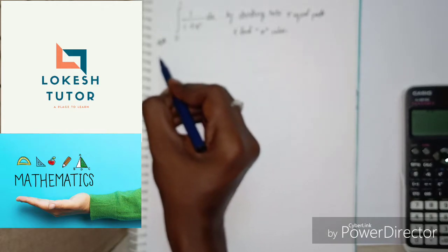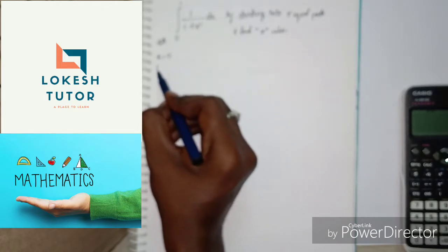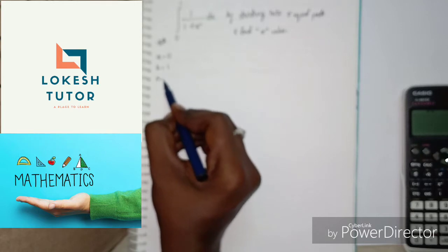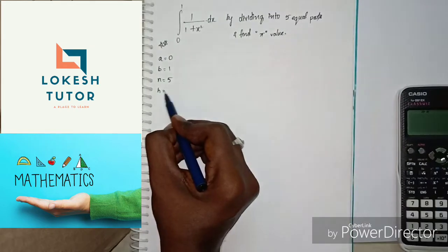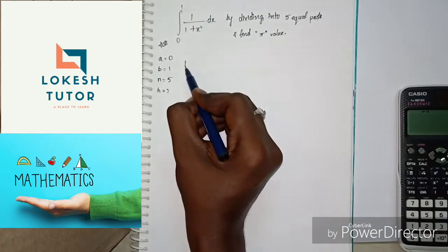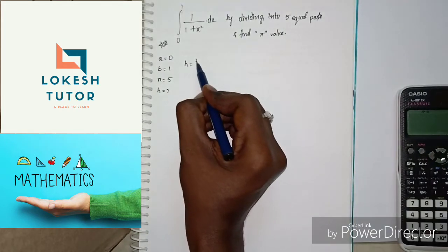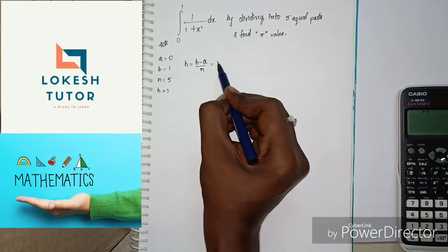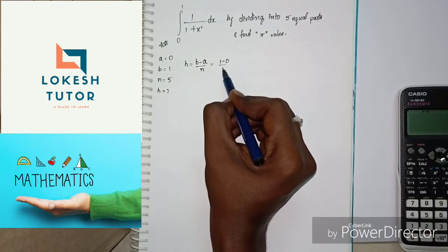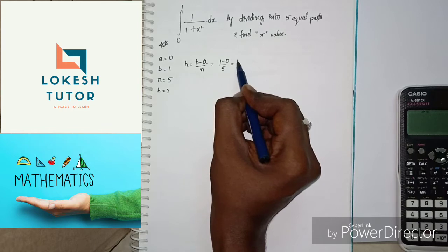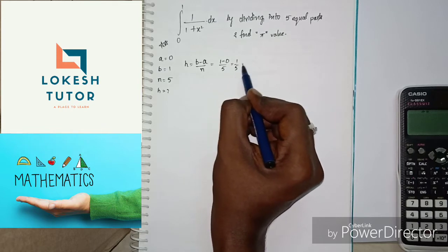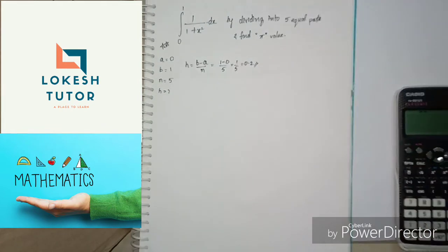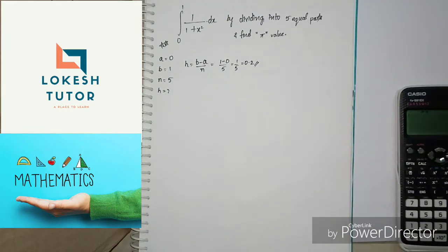First, lower limit A is 0, upper limit B is 1, and the number of equal parts N is 5. The H value is calculated as H equals B minus A divided by N. So H equals 1 minus 0 divided by 5, which gives 1 by 5, equal to 0.2.